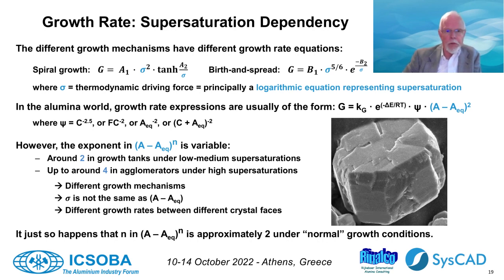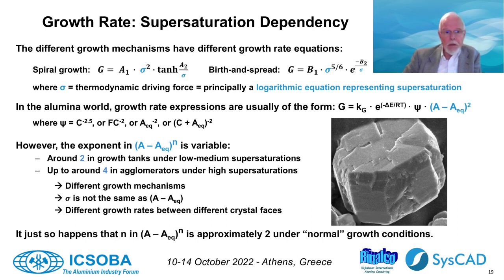Unfortunately, we don't know the exact formulation of sigma yet. Sigma is certainly not the same as A minus A-equilibrium. Nevertheless, it is convenient to use A minus A-equilibrium in rate equations, and there is no problem with that, as long as we realize that this is an empirical expression which has no genuine scientific basis. We use it in CISCAP as well, for instance in the form of the White-Bateman expression. The consequence is that the exponent of A minus A-equilibrium is not exactly two — in fact, it is variable. It varies from approximately two at low to medium supersaturations up to about four at high supersaturations in agglomerators.